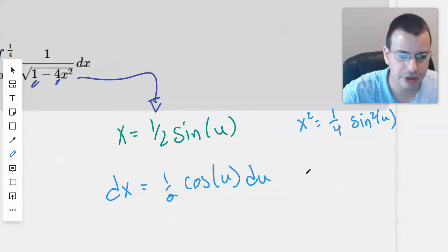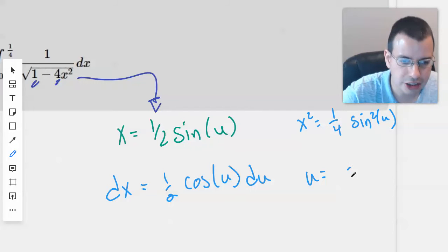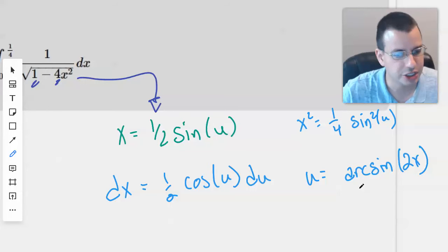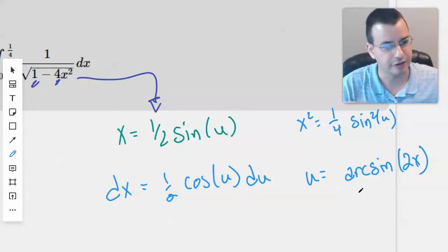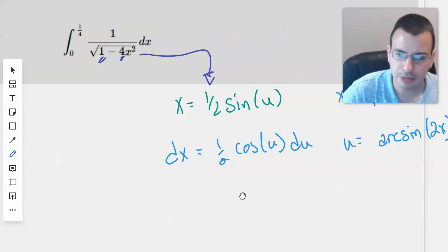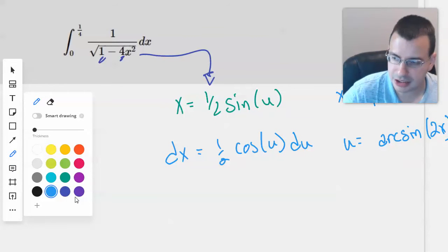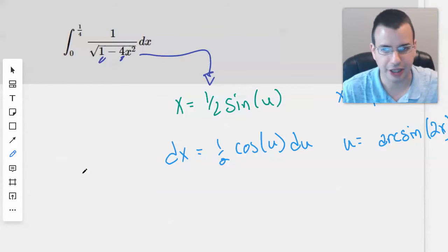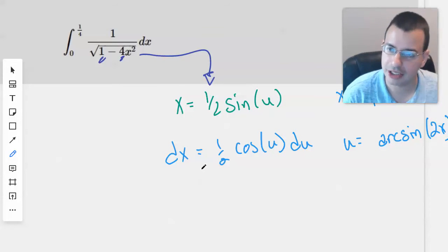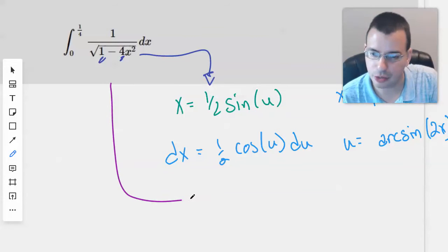And then just to be extra thorough, because we know we're going to need it, we'll find what u is. So u is arc sine of 2x. So we just took this and rearranged it. And then arc sine is just the inverse of sine. Okay, so now we start plugging things in and hope for the best. And if it doesn't work out, we'll just start again. Which is demoralizing, but it's not the end of the world.